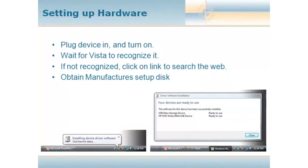Let's talk about setting up hardware. The good news with Vista is it's extremely easy — the vast majority of the time, you plug the new piece of hardware in, such as a flash drive or USB drive, turn it on if applicable, and it finds and installs it automatically. You'll see a little bubble pop up that says 'Found New Hardware' and you're done. That's the best case scenario, and most of the time it really is that easy, though you will get some challenges here and there.